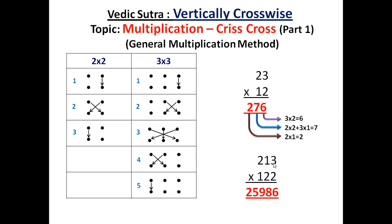Third step, 2 into 2 plus 3 into 1 plus 1 into 2. 2 into 2 is 4. 3 into 1 is 3. 1 into 2 is 2. 4 plus 3 is 7. Plus 2 is 9.